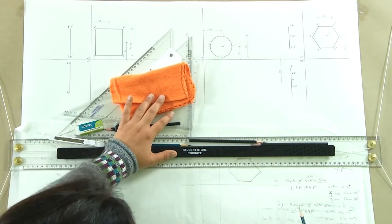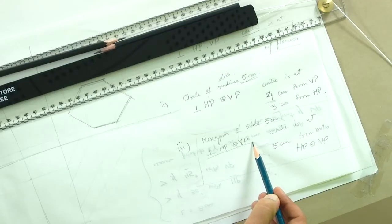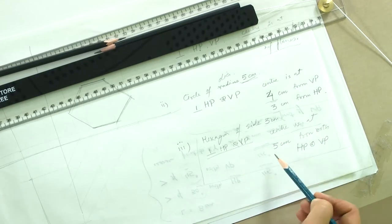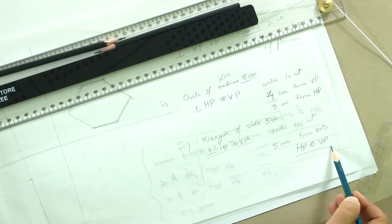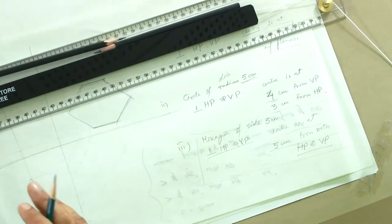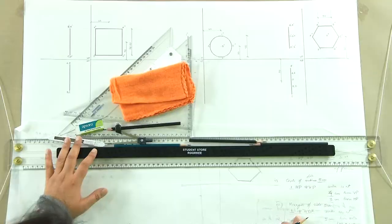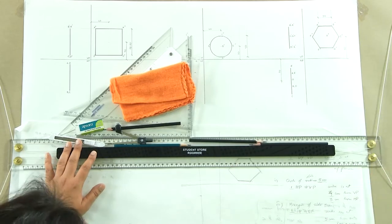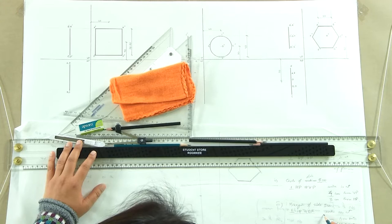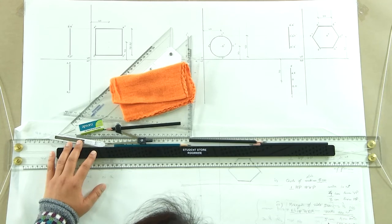We had to draw a hexagon of side 3 centimeters which was perpendicular to both HP and VP, and its center is at 5 centimeters from both HP and VP. The first thing we know clearly is that this hexagon will be seen in its true shape in the side plane, and we will be drawing its center first to start with.